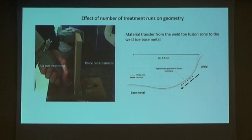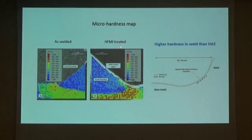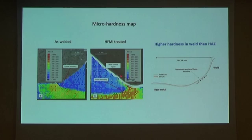The reason for this material movement from the weld to the base metal is related to higher hardness in the HAZ area compared to the weld area. You can see here the micro-hardness map as welded and after HFMI treatment. After treatment, we always have an increase in hardness in the treated region. However, the HAZ is harder than the weld metal. So after treatment, by increasing the number of runs from three to six, the weld region is softer, which is why we think material is transferred to that part.